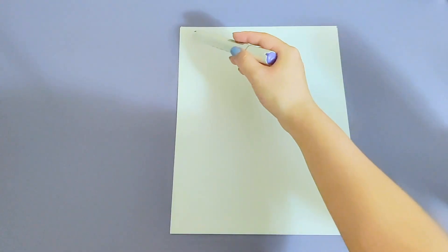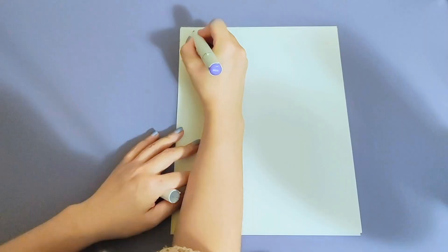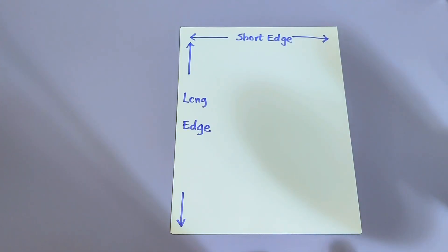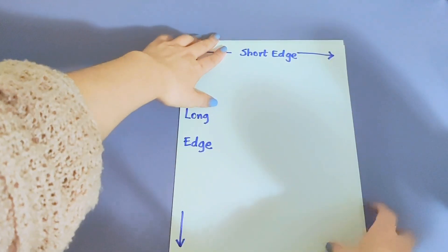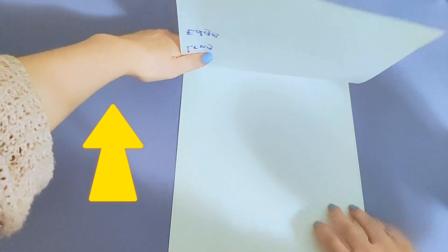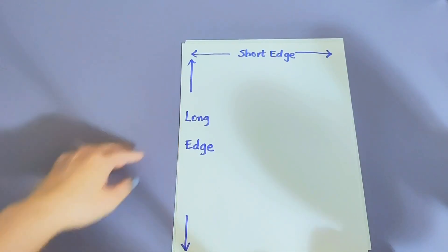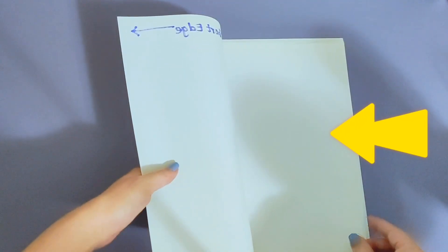One is long and one is short. The short one is known as the short edge or short side; the long one is known as the long side or long edge. The option you pick will affect how the document is flipped. If printed on the short edge, it flips this way like a calendar. If you choose the long edge, it flips this way just like a regular book.